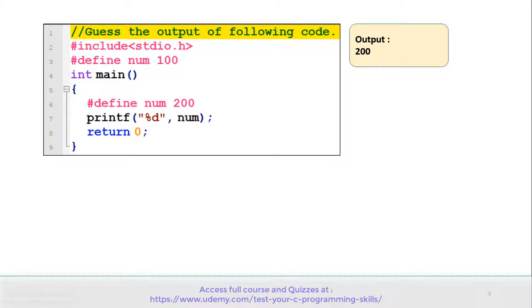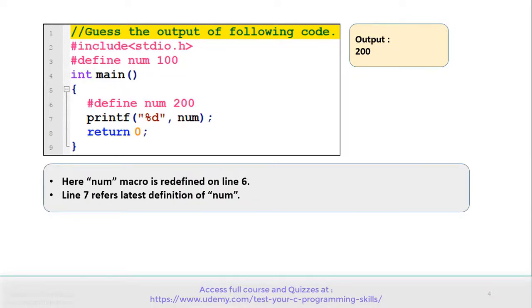Let's understand why we are getting 200 as output. In this program, the num macro is redefined on line number 6, and this is allowed by the compiler. Line number 7 refers to the latest definition of num, and that's why the output is 200.